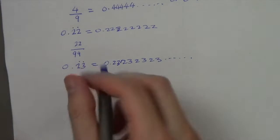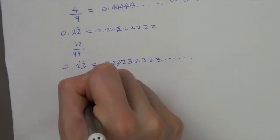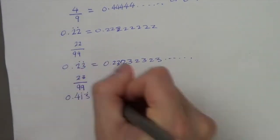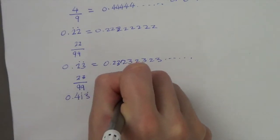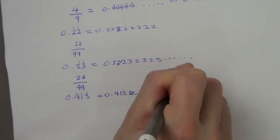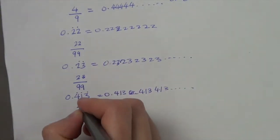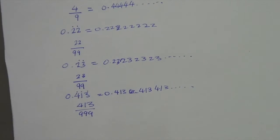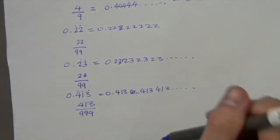Same thing. If I get 0.413 recurring and so on, that is equal to 413 over 999. And this pattern just continues on.